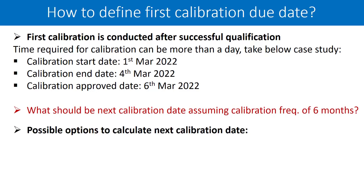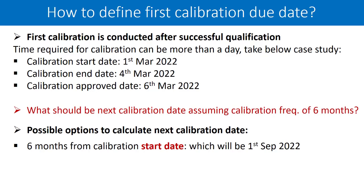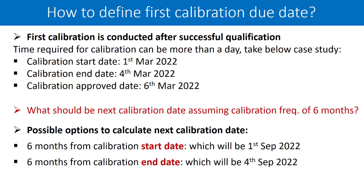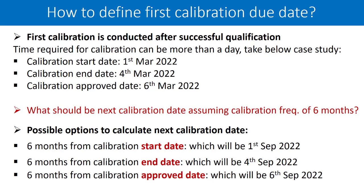You can have the following options. The first option is 6 months from the calibration start date, which will be 1st September 2022. The second option is 6 months from the calibration end date, which will be 4th September 2022. The third option is 6 months from the calibration approval date, which is 6th September 2022. I have simply calculated 6 months from each of the respective dates — start date, end date, and approved date.